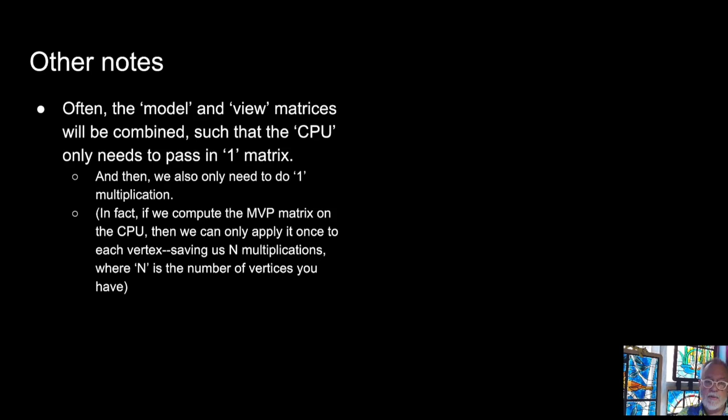Other notes is that even though in the shader that we will look at, we will see that the model, the view, and the projection matrix are computed independently, and we pass them into the shader. In general, you don't want to do two matrix multiplications per vertex, so you pull that out, you do that on the CPU, and you pass it in once to the GPU using a uniform such that you don't have to duplicate that multiplication.